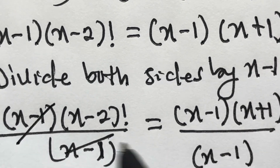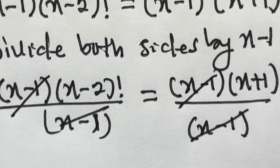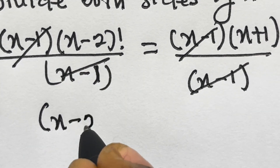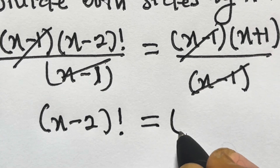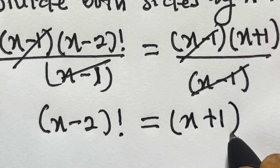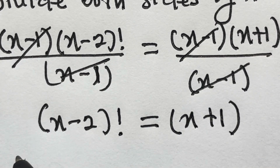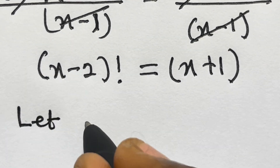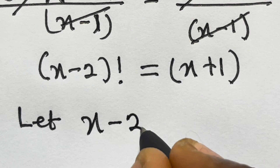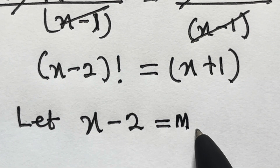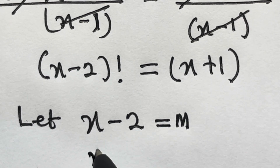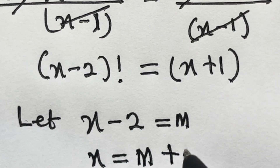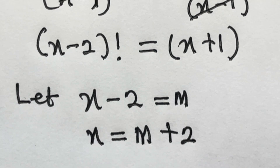We cancel x minus 1 from both sides, so we have x minus 2 factorial equals x plus 1. Now let's substitute x minus 2 equals m, which means x equals m plus 2.